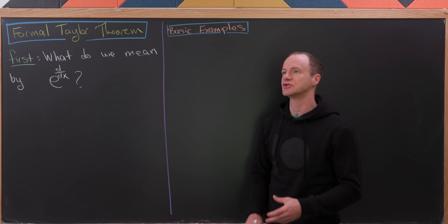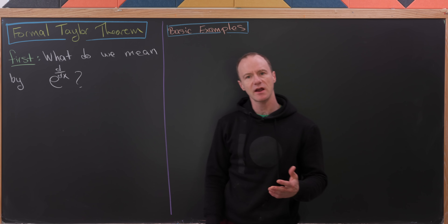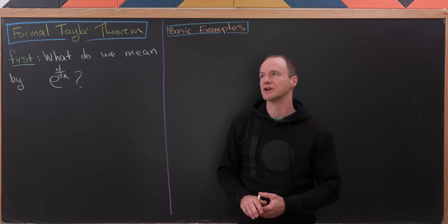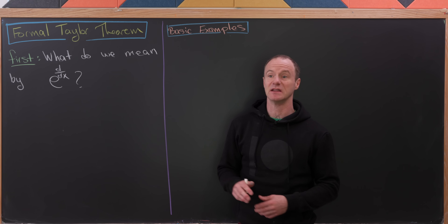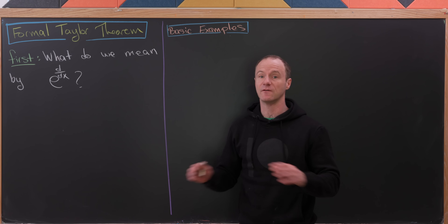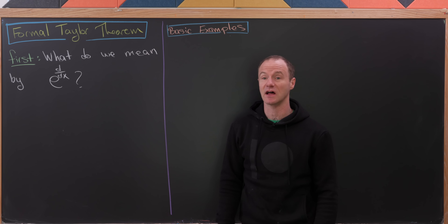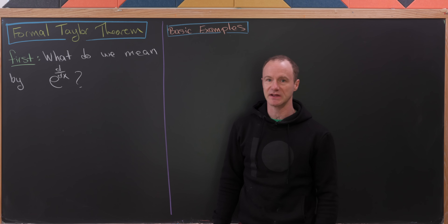Today we're going to talk about something called the Formal Taylor Theorem. I heard about it because it's related to my research area of vertex operator algebras. It was used in the Lepowski formulation of the formal calculus to describe the Jacobi identity. And the Formal Taylor Theorem has been applied to some other places in math.